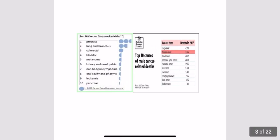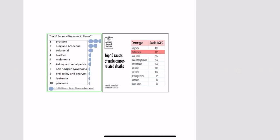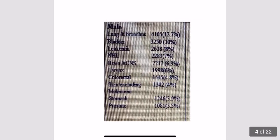Carcinoma of the prostate is the most common malignancy affecting males all over the world. In post-mortem studies in western countries, about 50 percent of all men over 50 years have carcinoma of the prostate. But in our country it is not so common and is preceded by carcinoma of the urinary bladder, as shown in this diagram.